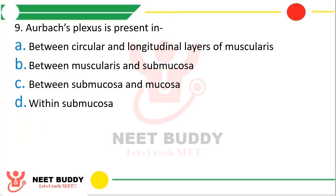Question 9. Auerbach's plexus is present in: option a. Between circular and longitudinal layers of muscularis, option b. Between muscularis and submucosa, option c. Between submucosa and mucosa, or option d. Within submucosa. The correct answer is option a — it is present between the circular and the longitudinal layer of the muscularis.